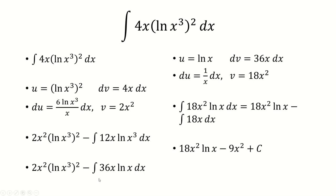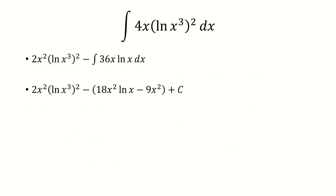And so we need to bring it together. We need to include the 2x squared ln of x cubed squared, and then subtract it with this answer that we got. So when we do that, we end up with 2x squared ln of x cubed quantity squared minus 18x squared ln of x plus 9x squared plus c. You can leave the answer like this, or you can factor out x squared and get that as our final answer.